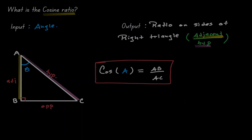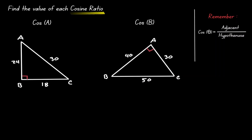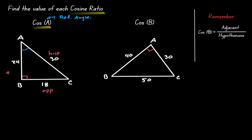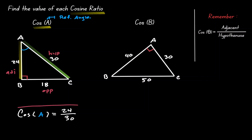Let's look at some examples for cosine. We want to find cosine of A in the triangle on the left. The value inside the parenthesis is our reference angle. With A as the reference angle, we label the triangle: the hypotenuse is opposite the 90 degrees, the opposite side is across from A, and AB is the adjacent. Cosine of A equals adjacent over hypotenuse, where the adjacent is 24 and the hypotenuse is 30.